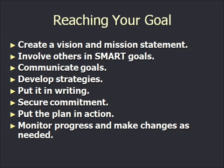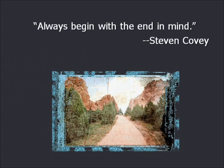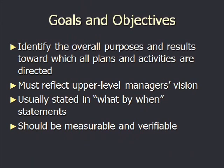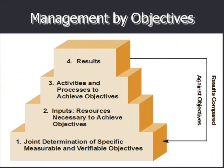Upper management must develop a general statement of broad goals and objectives for the firm. The terms goals and objectives are used interchangeably. Whenever possible, objectives should be stated in specific, measurable terms with a defined period of time. It's important to identify the overall purposes and results toward which all plans and activities are directed. Goals and objectives must reflect upper-level managers' vision and are usually stated in what-by-when statements that should be measurable and verifiable.